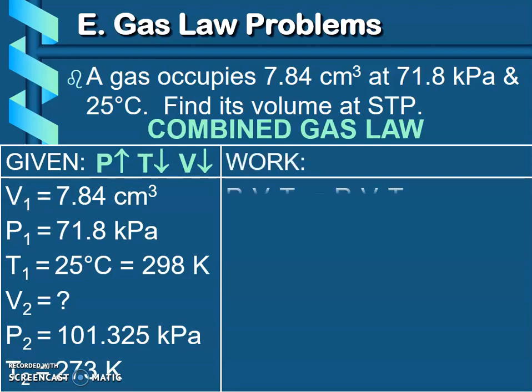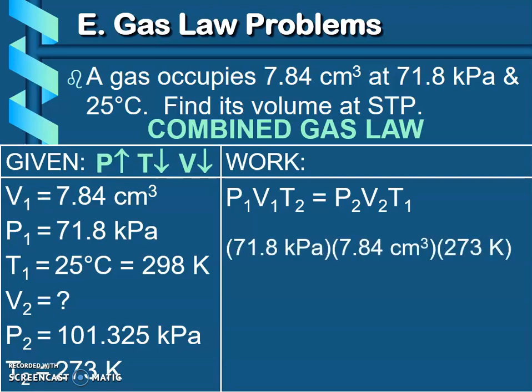So let's plug this into our equation, paying careful attention to make sure I am putting the right number in the right location. That's the biggest mistake that students make on these problems - they put their numbers in the wrong place. So we've got to make sure we get them in the right place. My P1, my starting, is 71.8. My V1, my starting volume, is 7.84.